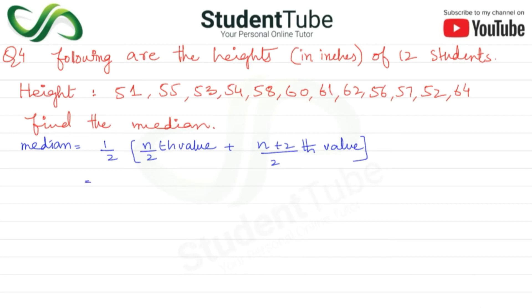So 1/2 here, and n means how many numbers there are. So 12 students means 12 numbers. n/2, so 12/2th value, plus n which is 12 plus 2 upon 2th value.